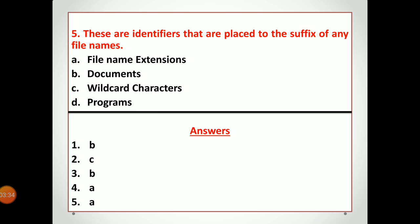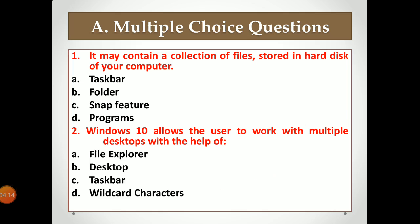Fifth question: these are identifiers that are placed at the suffix of any file name — the same thing that tells you what kind of file it is, whether it is a .doc file, an .mp3 file, etc. These identifiers are placed after file names. What are they called? Options: File Name Extension, Documents, Wildcard Characters, or Programs.